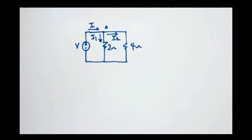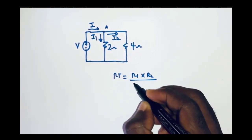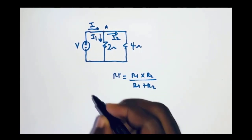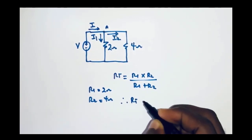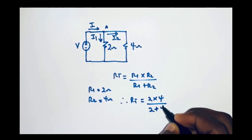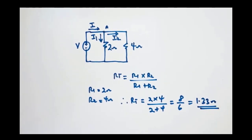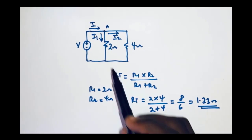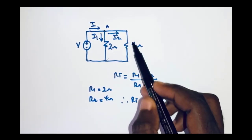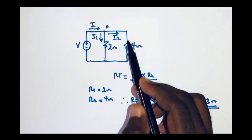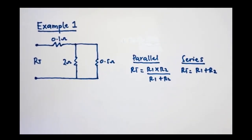The total resistance for two resistors connected in parallel is given by: Rt equals R1 multiplied by R2 divided by R1 plus R2. With R1 equal to 2 ohms and R2 equal to 4 ohms, Rt equals 2 multiplied by 4 divided by 2 plus 4, which gives 8 divided by 6, equal to 1.33 ohms. In summary, for parallel connection: different currents flow through each resistor, the voltage across both resistors is the same, and you can loop through without passing any other element.